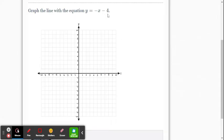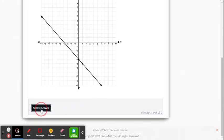y equals negative x minus 4. So my y-intercept this time is negative 4. So I go down to 0, negative 4. Plot that point. And then it's just a negative sign in front of the x. That means it's negative 1. So that means I either go up one, left one, or I can go down one, right one. Either way. Click your point, and then you have your line.